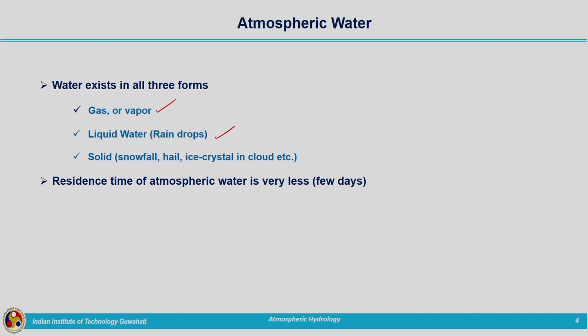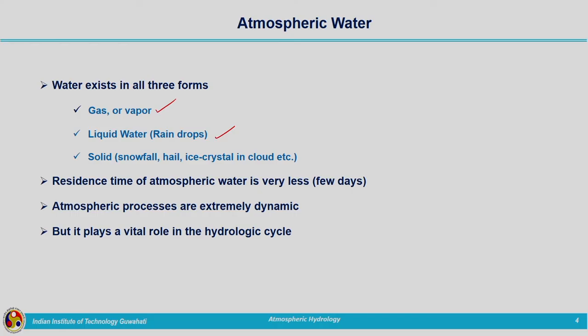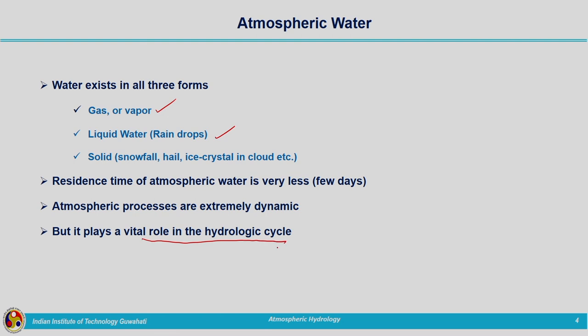When talking about atmospheric water, we generally look at water vapour, but all three phases of water are present in the atmosphere. The residence time of atmospheric water is very small, which is why the process is very dynamic and complex. Even though it exists in the atmosphere for very few days, we cannot ignore it — it plays a vital role in the hydrologic cycle.